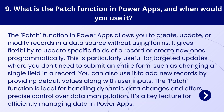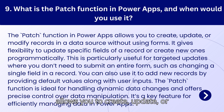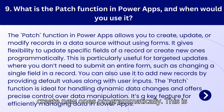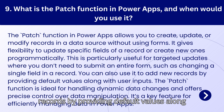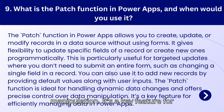Question 9: What is the Patch function in Power Apps, and when would you use it? The Patch function in Power Apps allows you to create, update, or modify records in a data source without using forms. It gives flexibility to update specific fields of a record or create new ones programmatically. This is particularly useful for targeted updates where you don't need to submit an entire form, such as changing a single field in a record. You can also use it to add new records by providing default values along with user inputs. The Patch function is ideal for handling dynamic data changes and offers precise control over data manipulation.